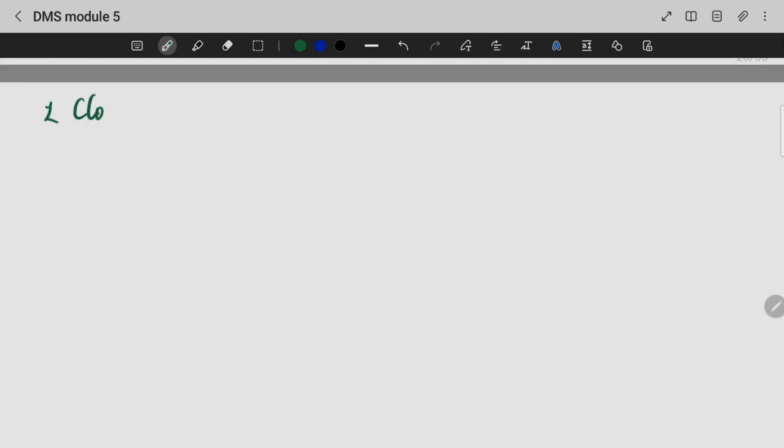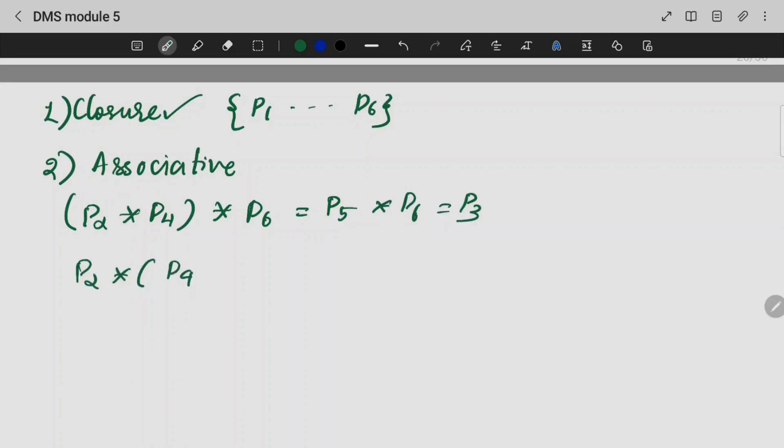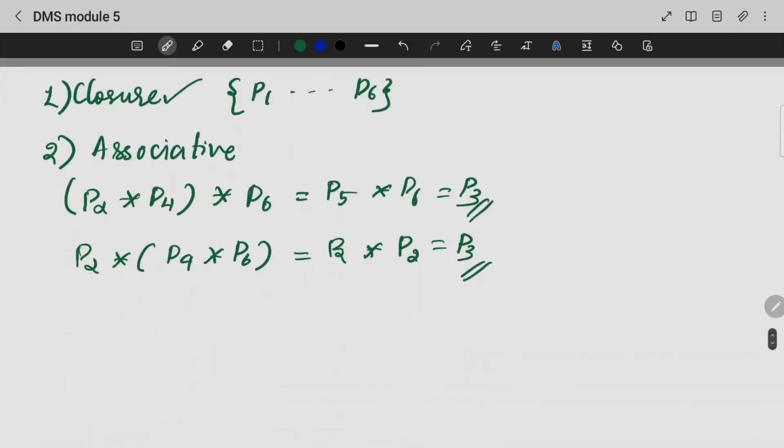The first one we need to check for is closure. If we are doing this table, there is no element that is not a part of the set. P1 through P6 are all elements. Hence, the closure property is satisfied. Second one is associativity. P2 star P4 star P6 will be nothing but P5 star P6, that is nothing but P3. So associativity property is satisfied.